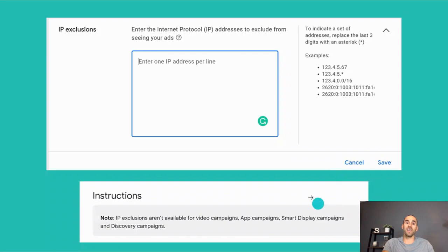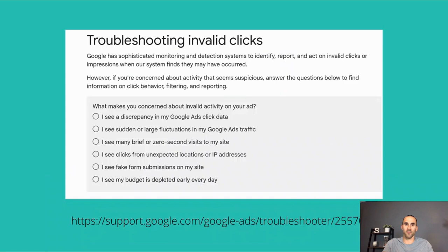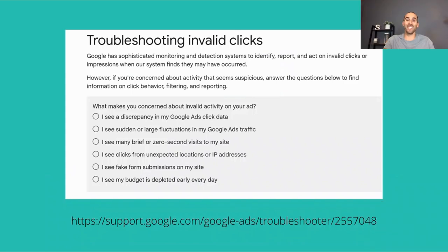Quick note: IP exclusions are not available for video campaigns, app campaigns, smart display discovery campaigns, and currently the new Performance Max campaigns. They are currently eligible inside of search campaigns. Google does a good job of hiding this, but you do have the ability to troubleshoot invalid clicks and let Google know you're concerned about invalid activity on your ads. They've got several options — there's a link below. If the problem is really bad, you may even be able to get a credit on your account for the activity you spotted if Google is able to verify it.